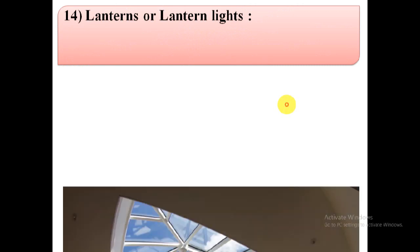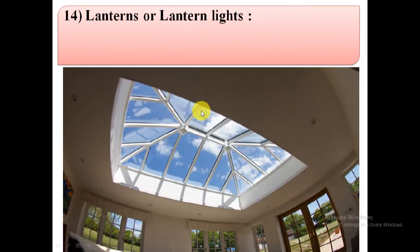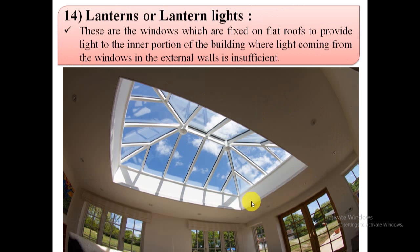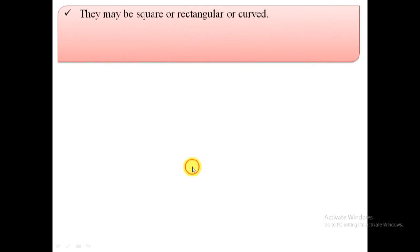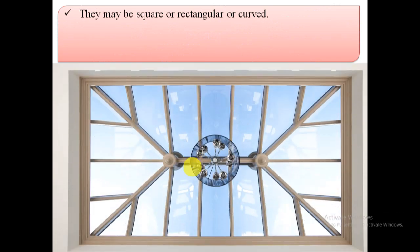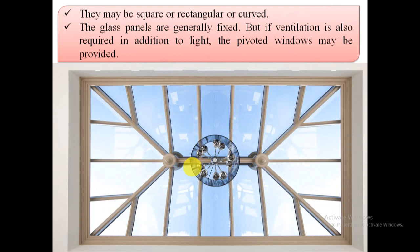The next type is lanterns or lantern lights. Lantern lights are windows fixed on flat roofs to provide light to the inner portion of the building where light from windows in the external walls is insufficient. These lanterns may be square, rectangular, or curved, and glass panels are generally fixed in them. If ventilation is also required in addition to light, pivoted windows may be provided.